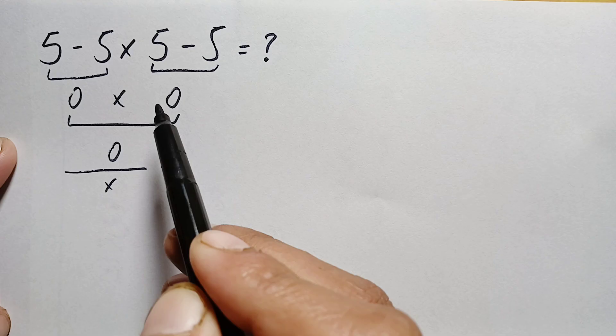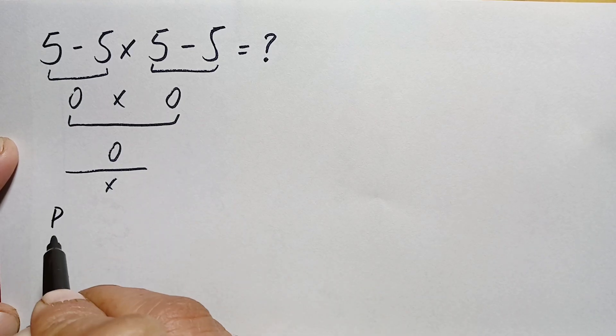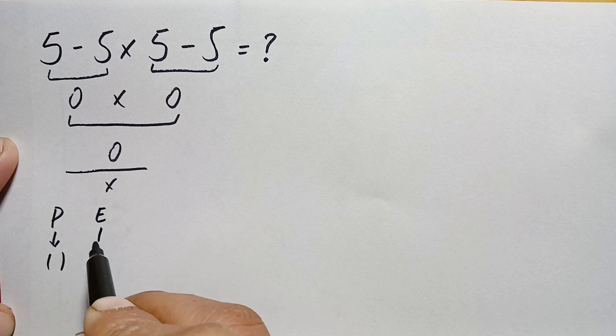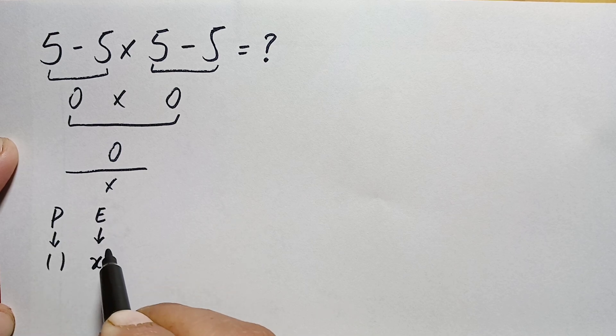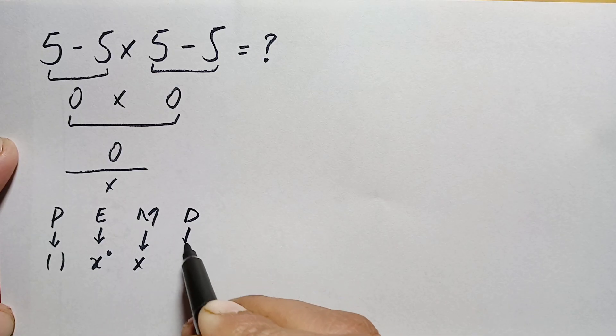To solve this properly and correctly, we will apply the PEMDAS rule, where P means parenthesis, E means exponents or powers, M means multiplication, and D means division.